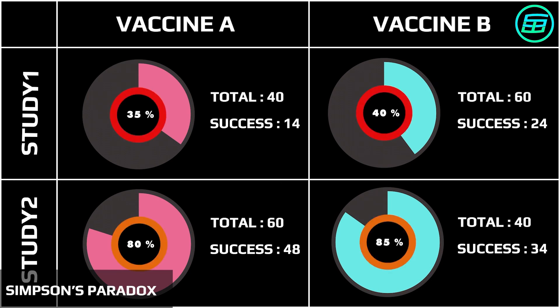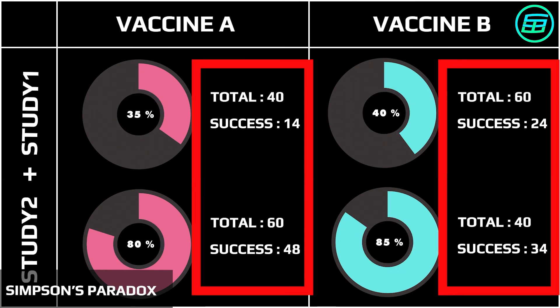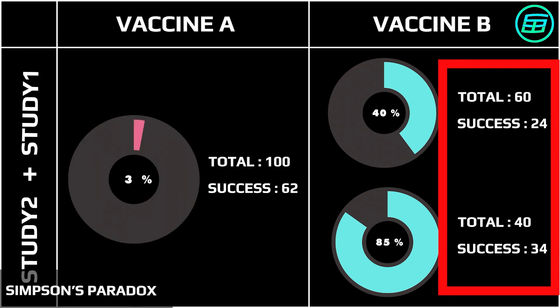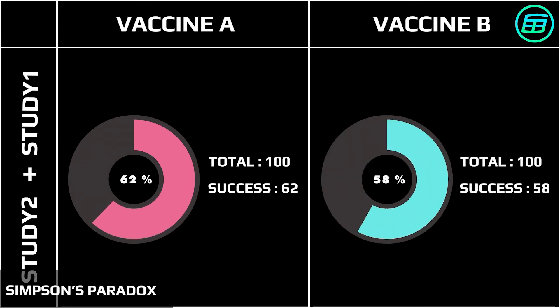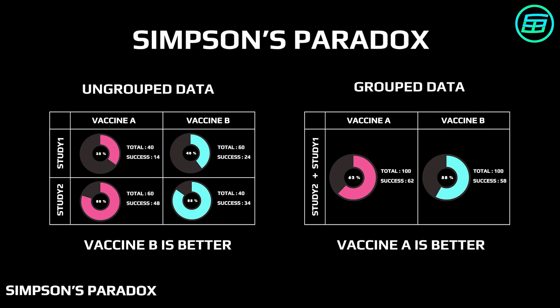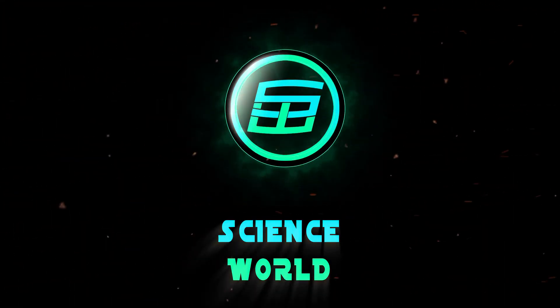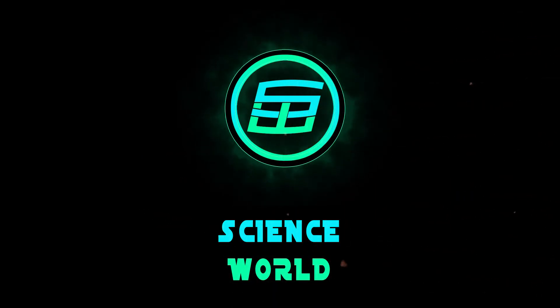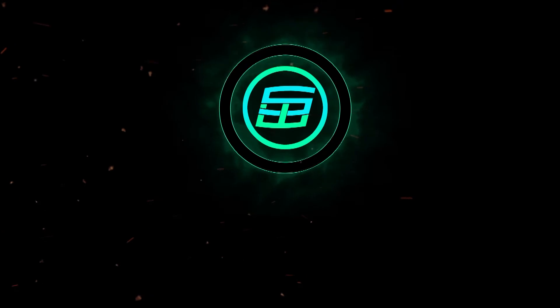The individual results make it seem as if vaccine B was more effective than vaccine A. But if we look at the combined result, vaccine A was tested on 100 people and was effective in 62 cases, whereas vaccine B was tested on 100 people and found effective in 58 cases. Now vaccine A is seen to be more effective than vaccine B. When ungrouped and grouped data produce opposite results like this, the situation is known as Simpson's Paradox.